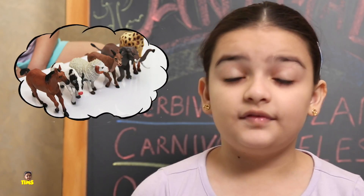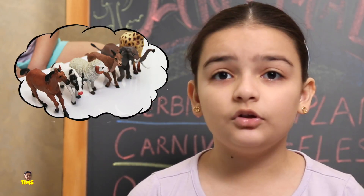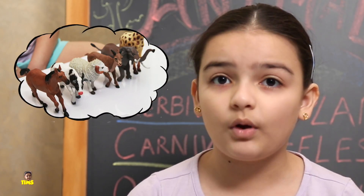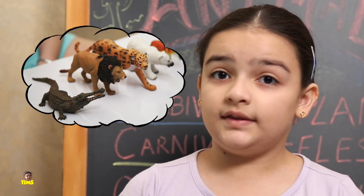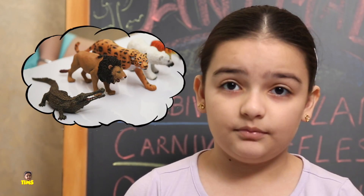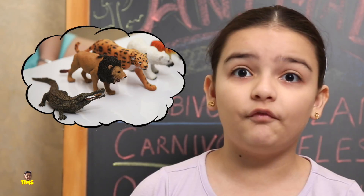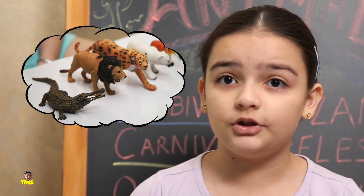Number one: Herbivore. These are animals which only eat plants to survive. Number two: Carnivore. These are animals which only eat flesh of other animals to survive.